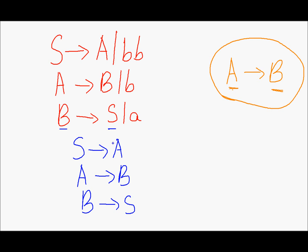We shall remove these three productions from the grammar. In place of this S, we can write terminal string BB because S produces A as well as terminal string BB. Next, in place of this B, we can write terminal string BB as well as terminal A — we got BB from here and we got A from here.